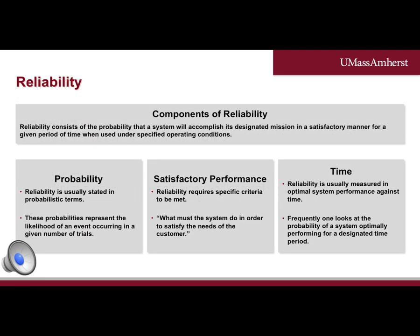Reliability consists of the probability that a system will accomplish its designated mission in a satisfactory manner for a given period of time and used under specified operating conditions. Reliability is closely related to probability, satisfactory performance, and time. Reliability is usually stated in probabilistic terms and requires specific criteria to be met. This criteria could be anything from data speed to miles per gallon to battery life, etc.